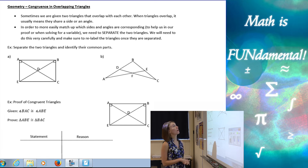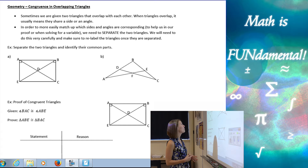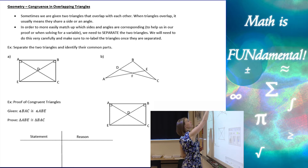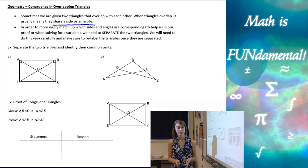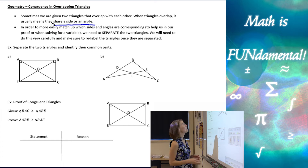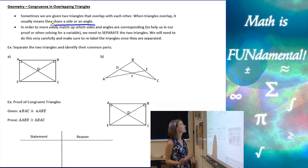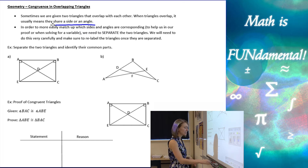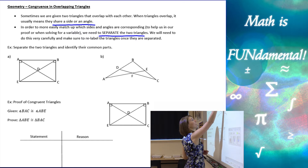Sometimes we're given two triangles that overlap with each other. When triangles overlap, it usually means that they share a side or an angle. In order to more easily match up which sides and angles are corresponding, or to help us in our proof or when solving for a variable, we need to separate the two triangles.